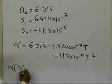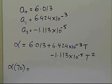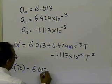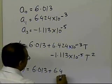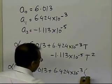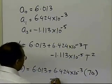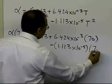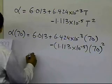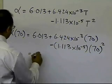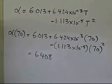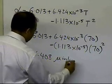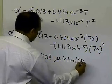We were interested in finding the coefficient of thermal expansion at temperature T equal to 70. So I'll just put 70 in there: 6.013 plus 6.424 times 10 to the power minus 3 times 70, minus 1.113 times 10 to the power minus 5 times 70 squared. This value turns out to be 6.408, and the units are the same as we used for alpha: micro-inch per inch per degree Fahrenheit.